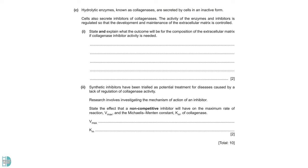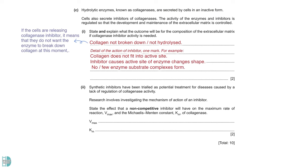Part C talks about a hydrolytic enzyme called collagenase and their inhibitors. The first question wants you to state and explain what the outcome will be for the composition of the extracellular matrix if collagenase inhibitor activity is increased. Firstly, let's state the outcome. If inhibitor activity is increased, collagen is not broken down or hydrolyzed. Then, give a detail of how inhibitors work. For example, it causes the substrate, collagen, to no longer fit into the active site of the enzyme. When this happens, collagen continues to be synthesized or released rather than broken down.